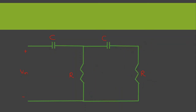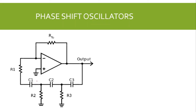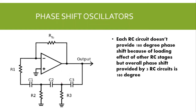Theoretically, a 180-degree phase shift can be achieved using two RC circuits, but for that we need R equal to 0. When R becomes 0, the gain of the circuit also becomes 0, so R equal to 0 is not practically possible and we cannot achieve 180 degrees practically. Therefore, at least three stages of RC circuits are required to achieve a 180-degree phase shift. We can use more than three stages, but three is the minimum. Note that each RC stage does not individually provide 60 degrees due to the loading effect of the other stages, but the overall phase shift from three stages is 180 degrees. To prevent the loading effect, emitter follower circuits can be connected to each RC stage.